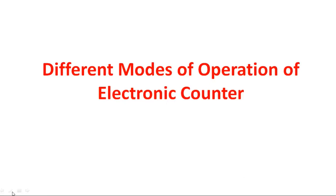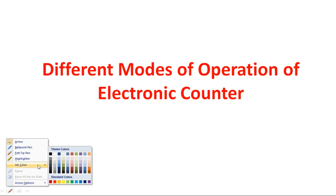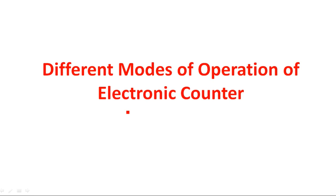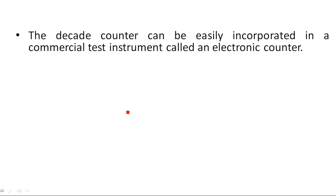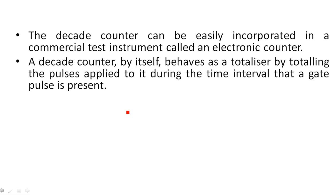In this video I am going to explain different modes of operation of an electronic counter. An electronic counter is an instrument used to count the number of pulses by using a decade counter. The decade counter can be easily incorporated in a commercial test instrument called an electronic counter. A decade counter by itself behaves as a totalizer, by totaling the pulses applied to it during a time interval.